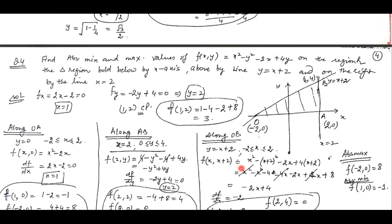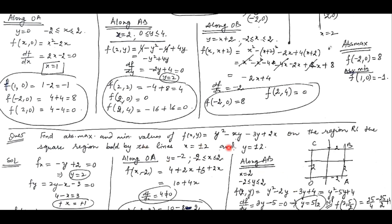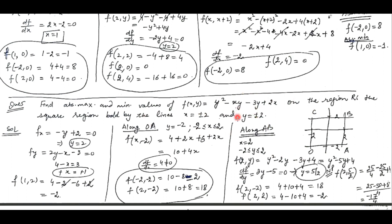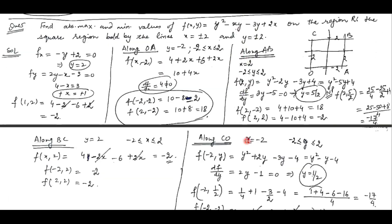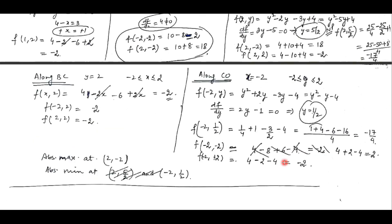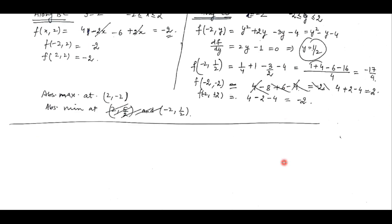Similarly, we can find out absolute maximum and minima of this function over this region. The procedure is the same: find out the partial derivatives, put them to be 0 to get the critical point, then check along all the boundary lines by converting the function into a single variable.